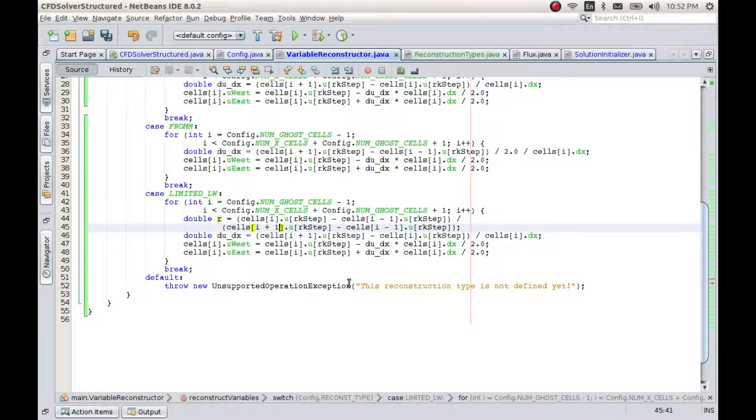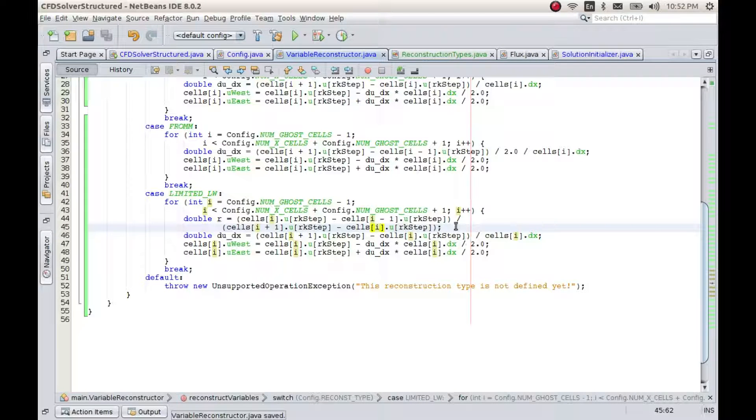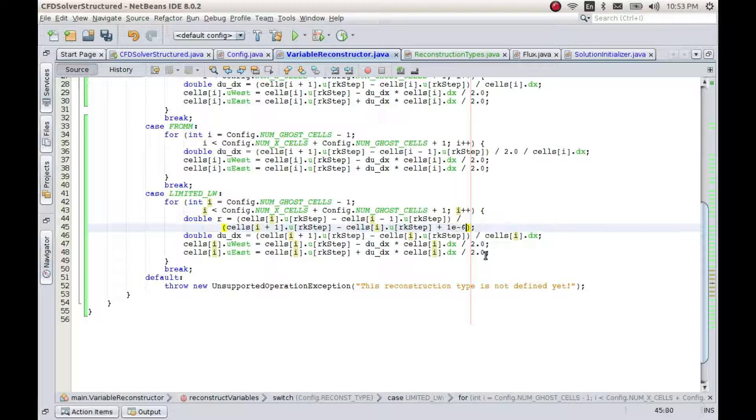I have to make sure this denominator never becomes equal to zero. To take care of that, I'll just add a small quantity, say 1×10^-6, and the same thing in the numerator as well.